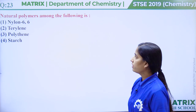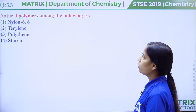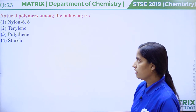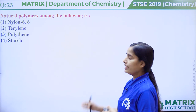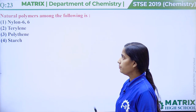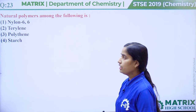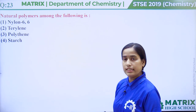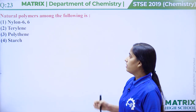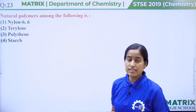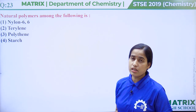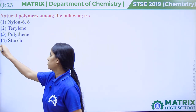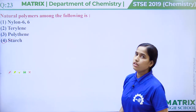Question number 23: Natural polymers among the following is. Option 1, nylon 66 — it is an artificial or synthetic polymer. Option 2, Terylene — it is artificial. Option 3, polythene — also artificial. But option 4, starch — starch is an example of a natural polymer. So the correct answer should be option number 4.